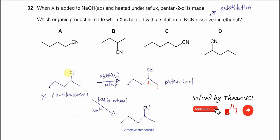Now we have X and we can use it for the question. Which organic product is made when X is heated with a solution of KCN dissolved in ethanol? This is also a substitution reaction, but now we use a cyanide ion to substitute the chlorine. So the chlorine is substituted by the cyanide to form a nitrile — 2-methylpentanenitrile.